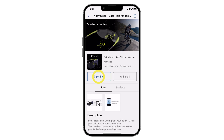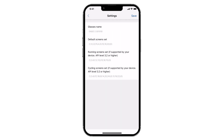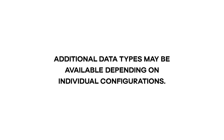Please note that some data types require an additional sensor, for example heart rate, cadence, and power for cycling. Additional data types may be available depending on your individual configuration. For example, some electronic shifting systems or continuous glucose monitors may be available in data fields when connected to a compatible Garmin device.